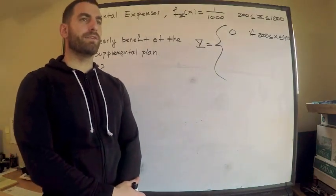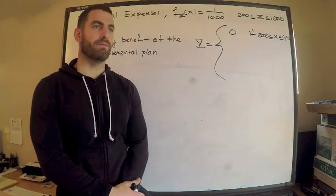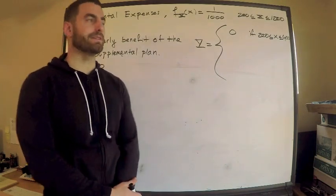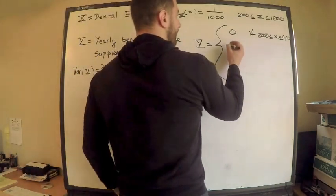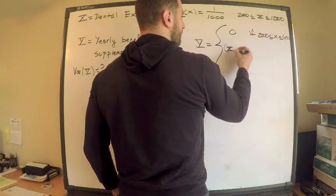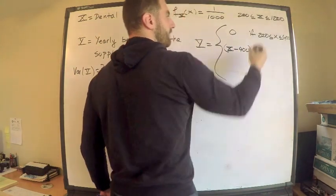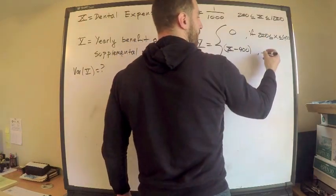Then after the first 400 expenses, the supplementary plan kicks in, but it only pays expenses in excess. So it will pay the expenses, x, in excess of 400. And that's for 400.